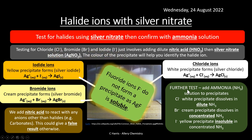Fluoride ions are omitted from this test because silver fluoride is soluble — no precipitate forms. Going in order of solubility: silver chloride dissolves readily with dilute ammonia, silver bromide only with concentrated ammonia, silver iodide doesn't dissolve in either, and silver fluoride is soluble without any ammonia needed.